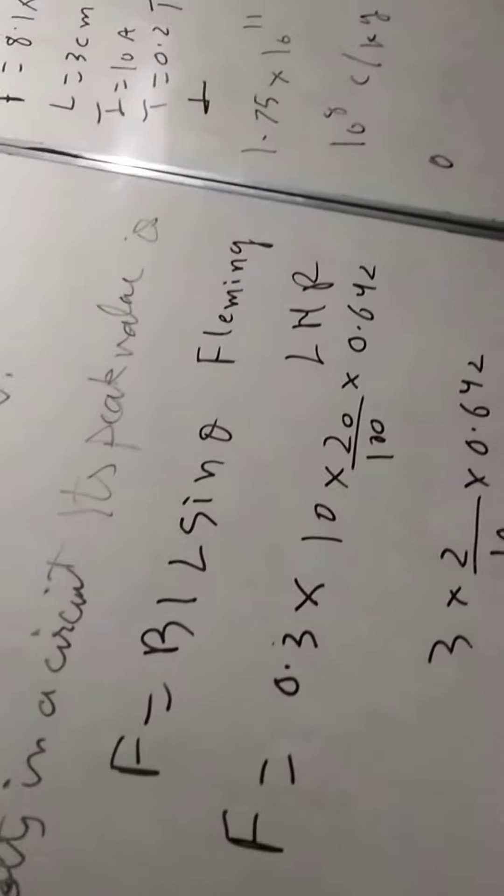Phir ek bade hi aachi MCQ hai. In AC voltage major V naught volts in a circuit, its peak value is given by, toh yeh hota hai root 2 V naught. Yeh correction. Kandle je ka book mein bhi root 2 V naught.